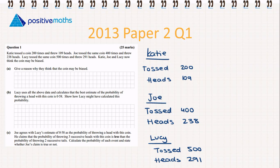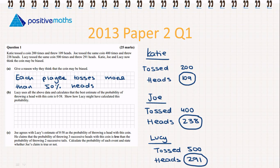What we're noticing is that Katie got heads more than 50% of the time. So did Joe, and so did Lucy. That will be our answer. Give a reason why they think the coin may be biased. Each player tossed more than 50% heads.